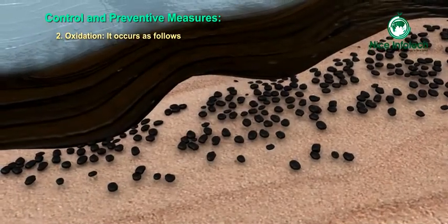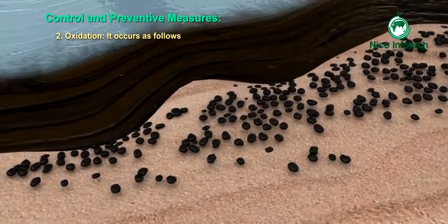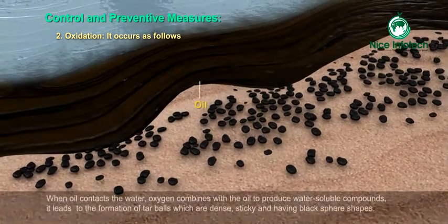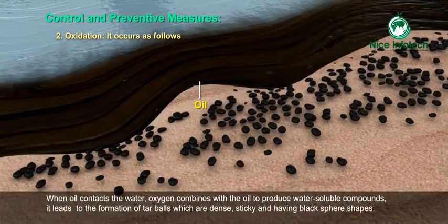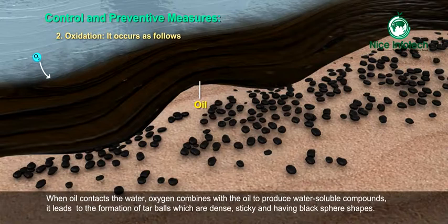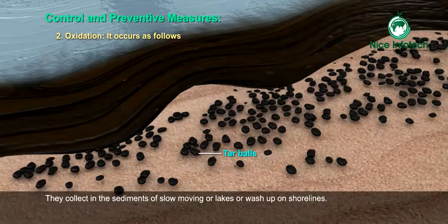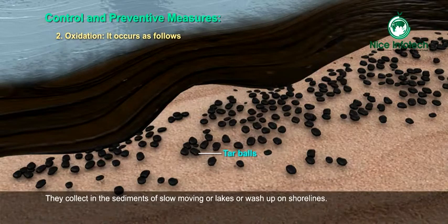Oxidation: This occurs as follows. When oil contacts with water, oxygen combines with the oil to produce water-soluble compounds. It leads to the formation of tar balls, which are dense, sticky and have black spear shapes. They collect in the sediments of slow-moving rivers or lakes, or wash up on shorelines.